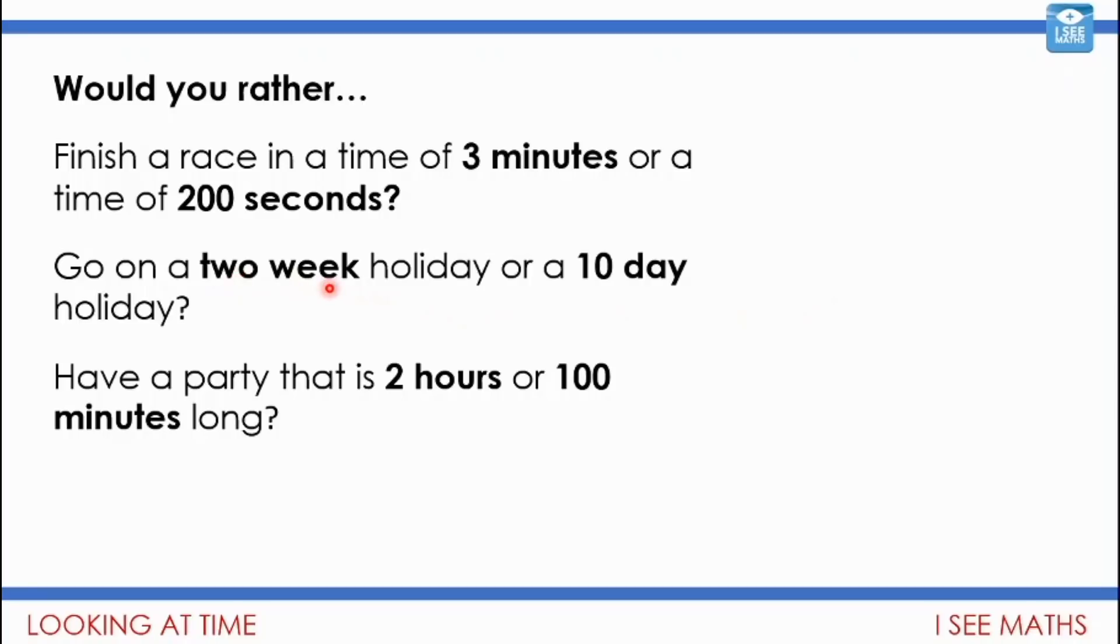A party that's two hours long or 100 minutes long—each hour is 60 minutes, so if I'm enjoying my party, two lots of 60 minutes is 120 minutes. I think I'd rather have the two hour party than the 100 minute one, assuming I'm enjoying my party, which I would be.